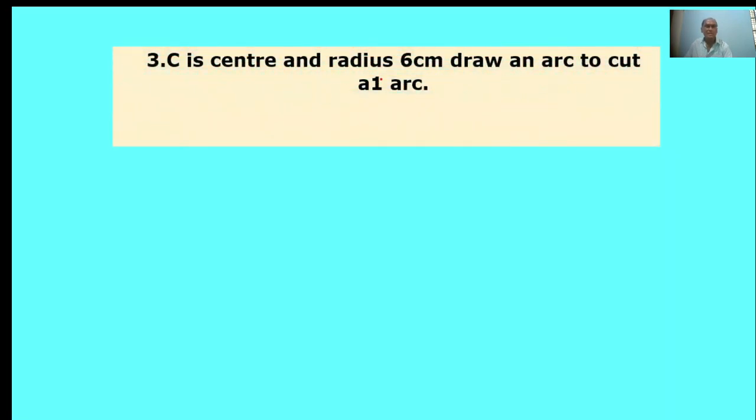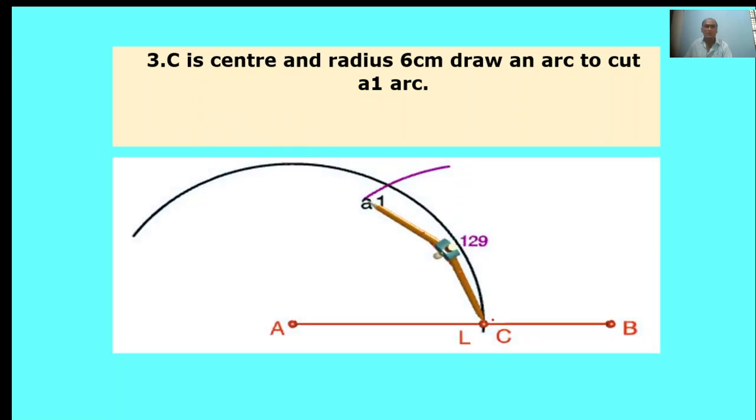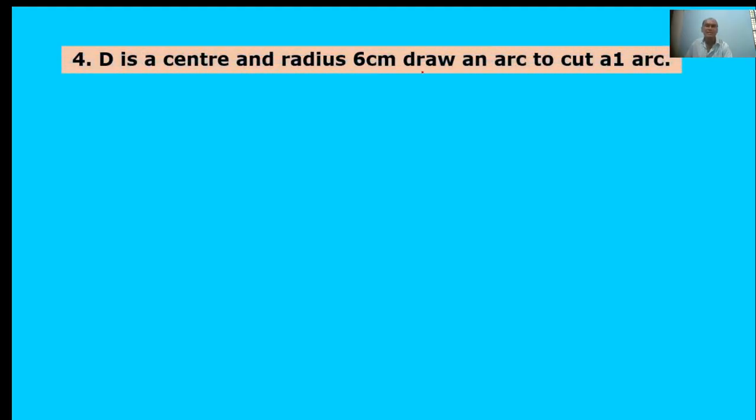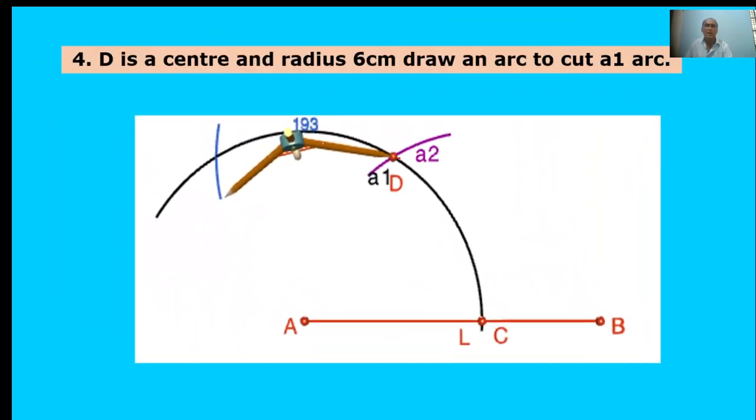C is center and radius 6 cm, draw an arc to cut A1 arc. Same process. Here, point D is center and radius 6 cm, draw an arc to cut A1 arc. Point D intersect. D is center point. Radius is 6 cm.